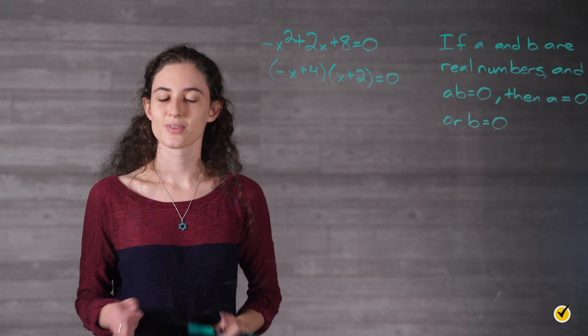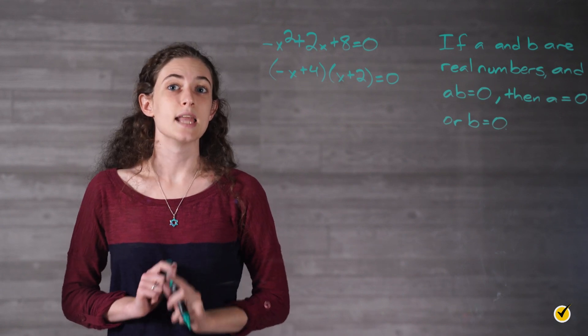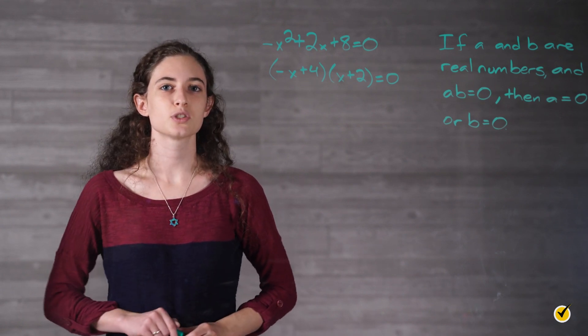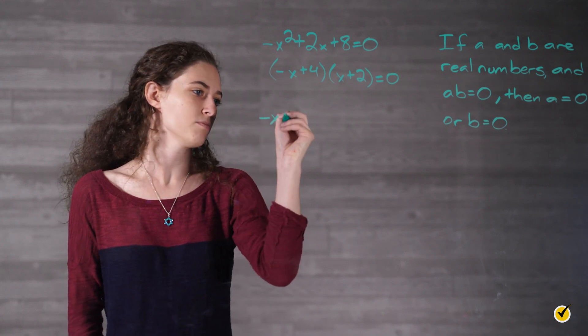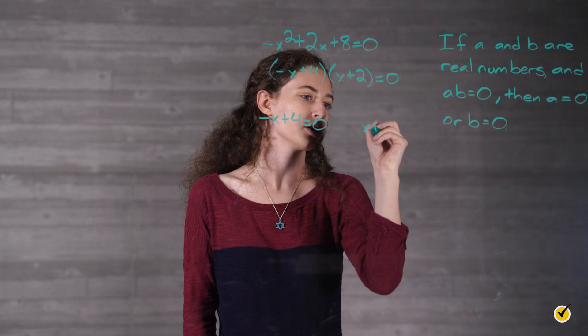Makes sense, right? Back to our equation. Negative times (x minus 4) times (x plus 2) equals 0 means that negative (x minus 4) equals 0 or x plus 2 equals 0.